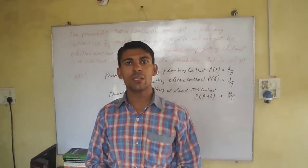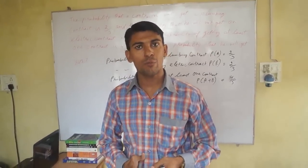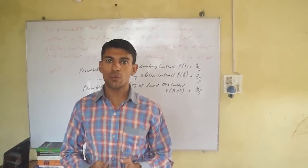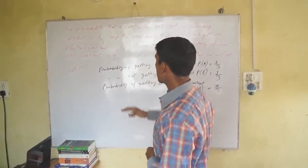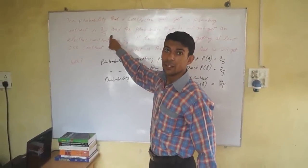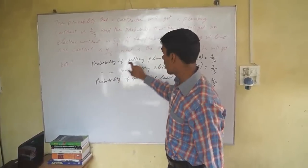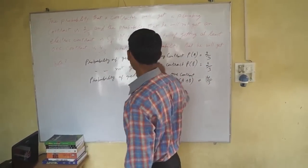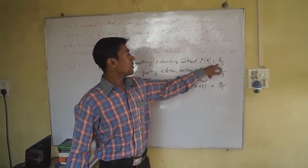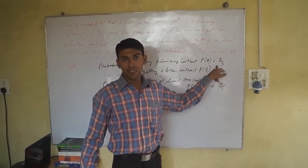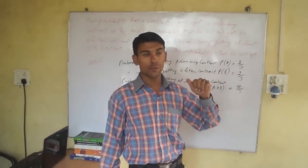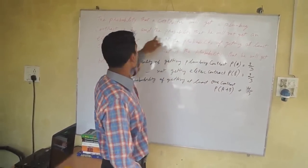Dear students, today we are starting the lecture series of probability and we are taking one problem every day. The first problem: the probability that a contractor will get a plumbing contract is 2/3. In probability language, the probability of getting a plumbing contract, P(A), is equal to 2/3.